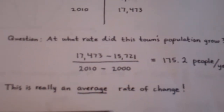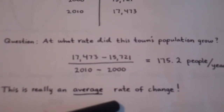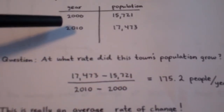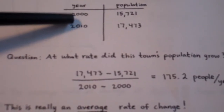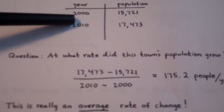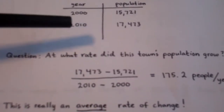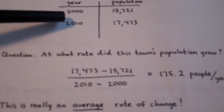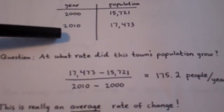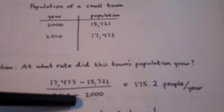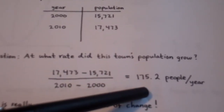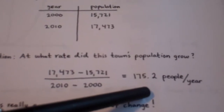That's really only an average growth rate, because during this 10-year period, there may have been some years where the population grew a little more rapidly than in other years. In some cases, the population may have even gone down. But overall, over the 10-year period, the population grew at an average rate of 175.2 people per year.